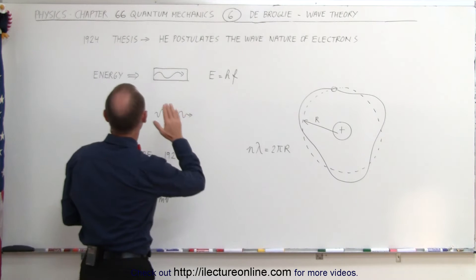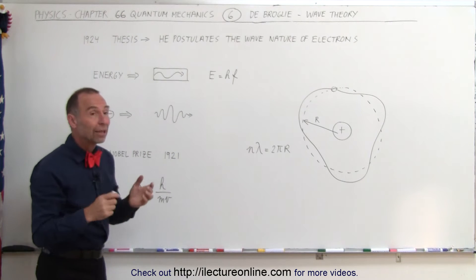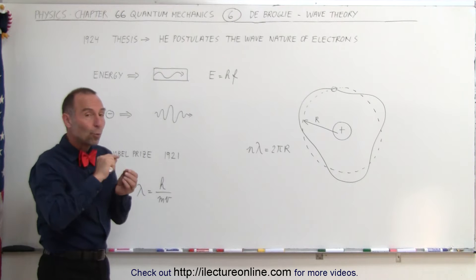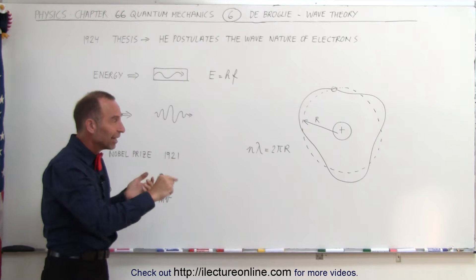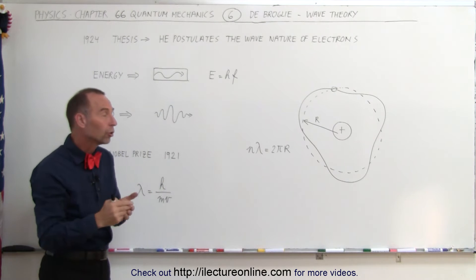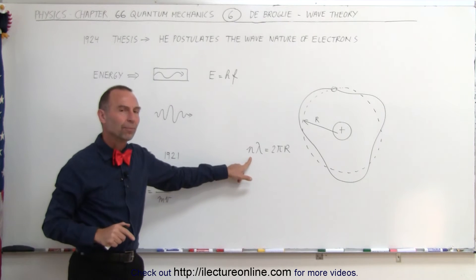And it was de Broglie who began to realize that the wavelengths, the number of wavelengths in the orbit of the electron around the nucleus, depended upon the energy state that it was in.